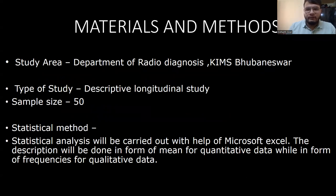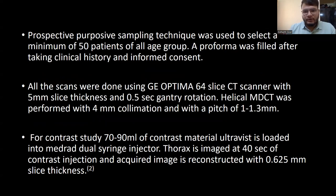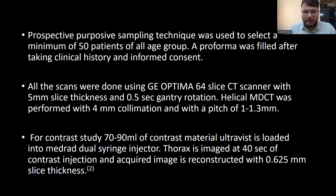This is a descriptive study done over a period of 8 months in Bhubaneshwar at Pai Institute. A total of 50 cases were taken and statistical analysis was carried out with Microsoft Excel. The CT machine used was a GE Optima 64-slice CT scanner with 5mm slice thickness. Contrast was administered using Ultravist in a dual syringe injector, with images taken at 40 seconds post-contrast injection and reconstructed at 0.625mm slice thickness.